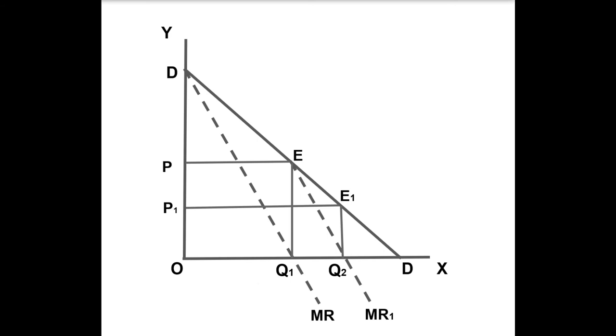So, seller A does not react to B's move and compromises with the existence of B. And accordingly, he decides to reduce his output from OQ1 to OQ3, which is equal to B's output Q1 Q2.